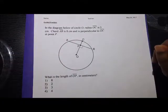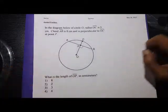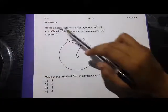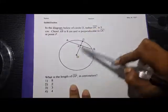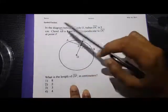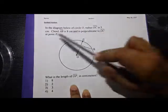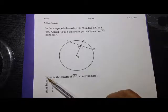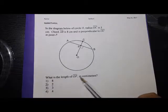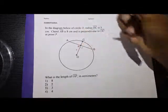Alright then, so with that being said, we can now jump into this problem. So it says in the diagram below of circle O, radius OC is 5 centimeters, chord AB is 8 centimeters, and is perpendicular to OC at point P. Now it's asking us what is the length of OP in centimeters. So we're trying to find this value here.